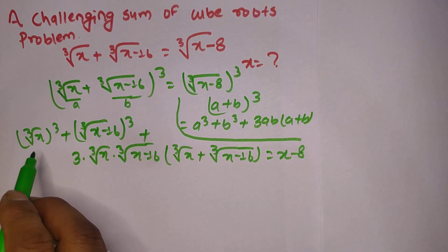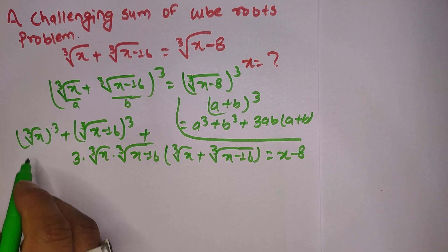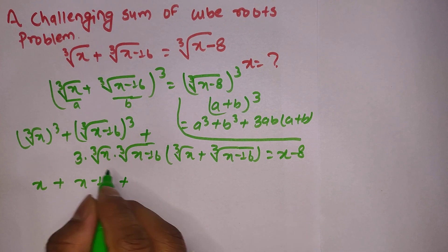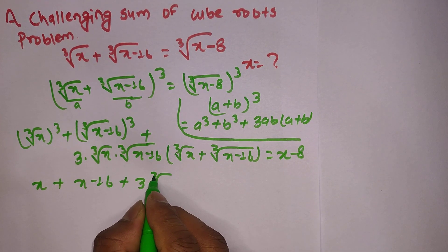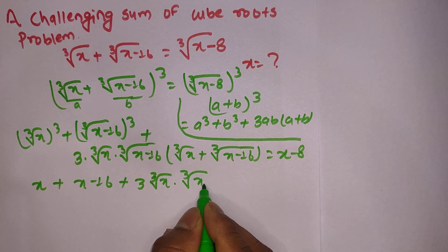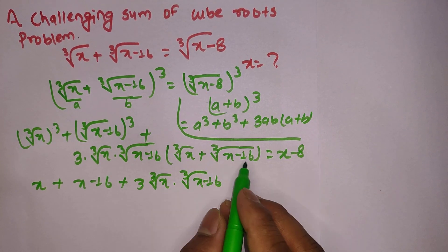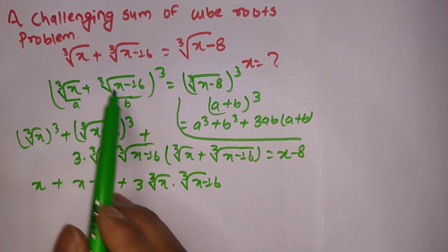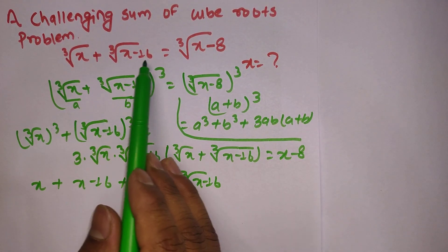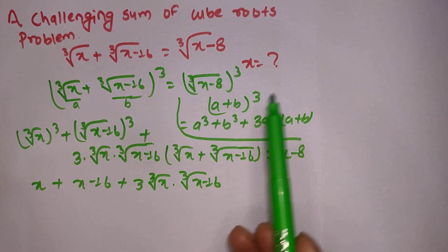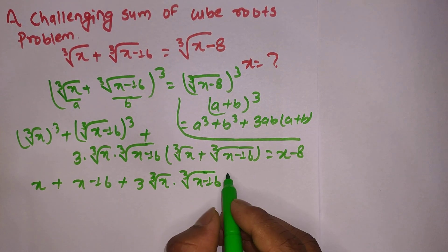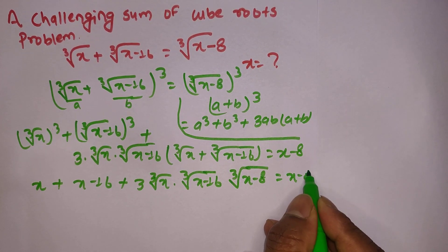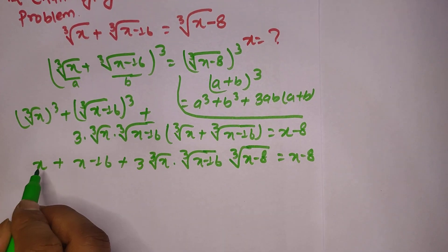On the right side, the cube and cube root cancel, leaving x minus 8. On the left side, the cube and cube root similarly cancel, giving us x plus x minus 16, plus 3 times cube root of x times cube root of x minus 16, and this (a plus b) term equals cube root of x minus 8. So we substitute cube root of x minus 8 on the right side.